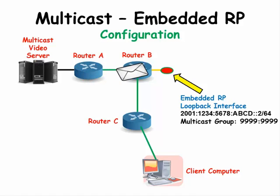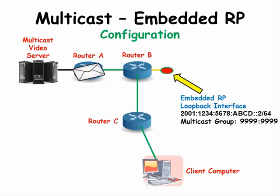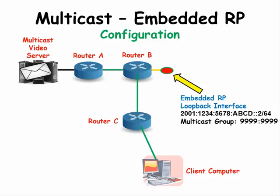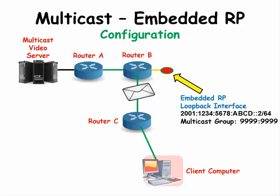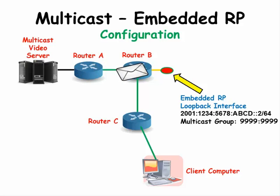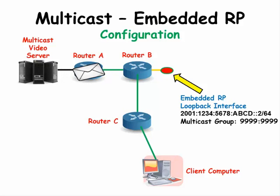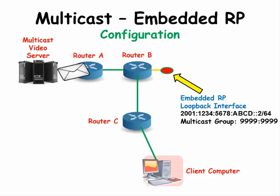Embedded RP with IPv6 Multicast is a very nice concept. It simply embeds the Rendezvous Point IPv6 address as part of the multicast group address. This way, when the multicast router sees the group address, it can extract the RP and begin to use it for the shared tree immediately. The only thing that has to be hard-coded on the router is to tell the RP that it is an RP. All the other routers in the network dynamically learn of the RP address from the group address.